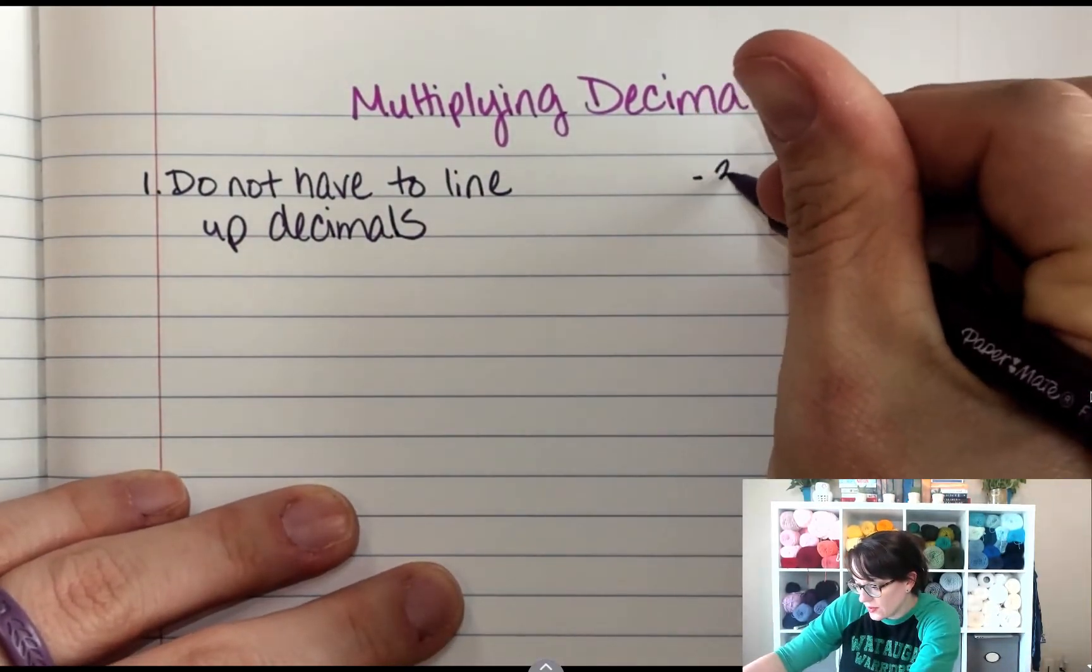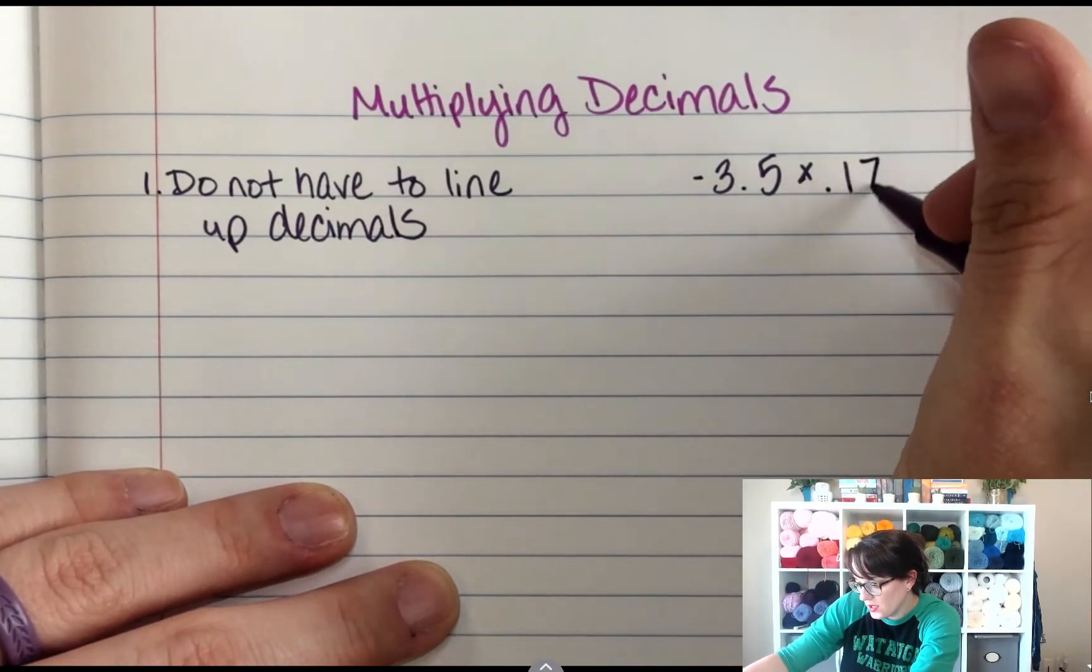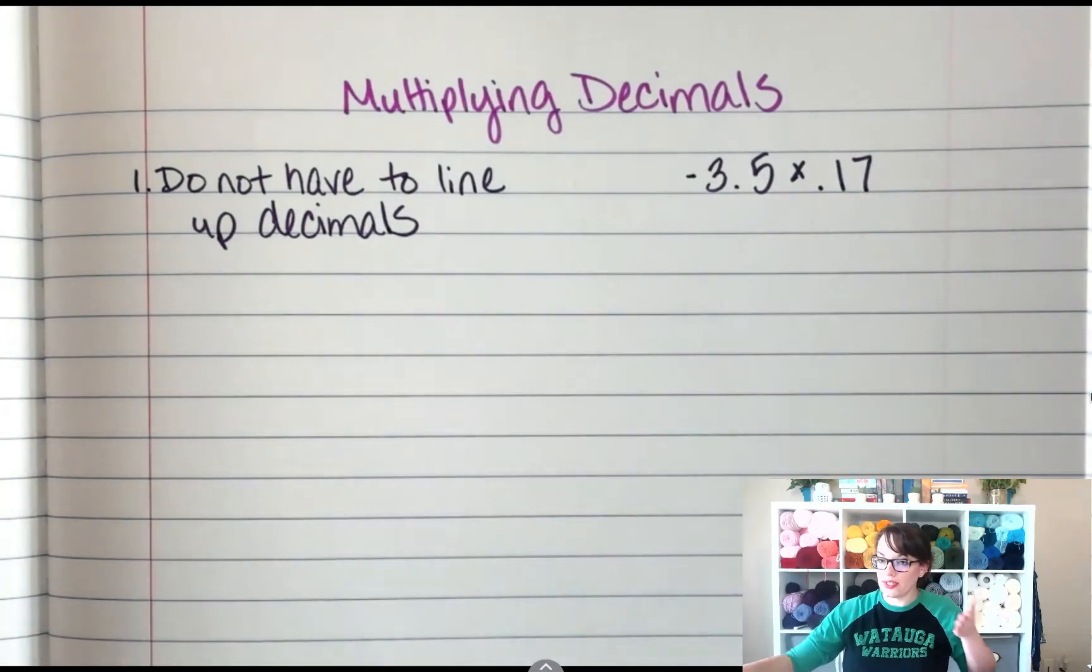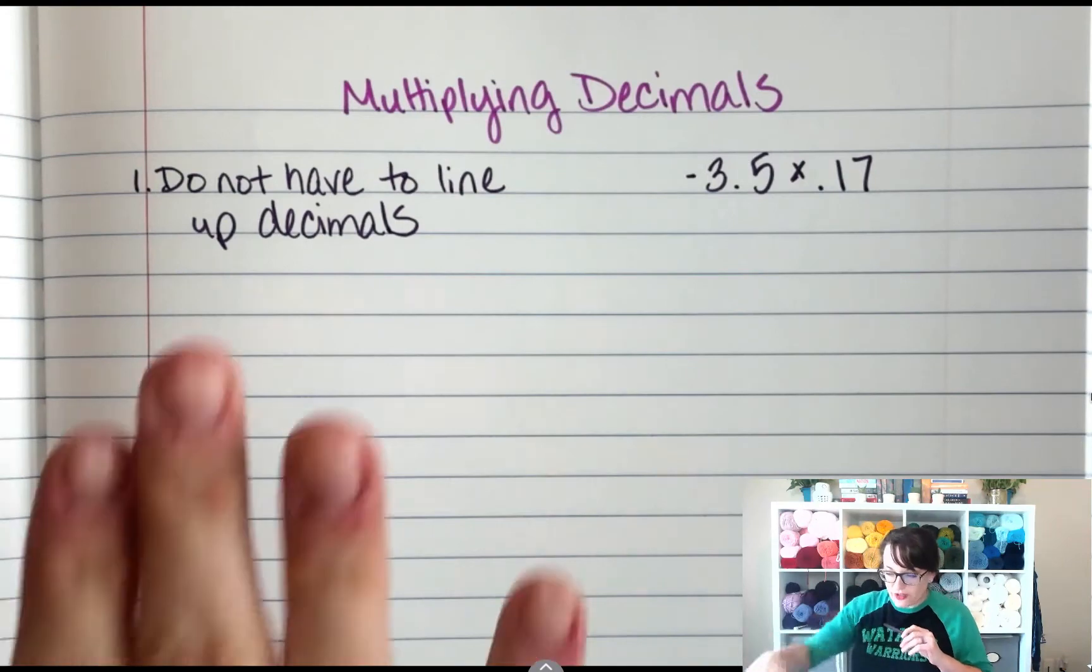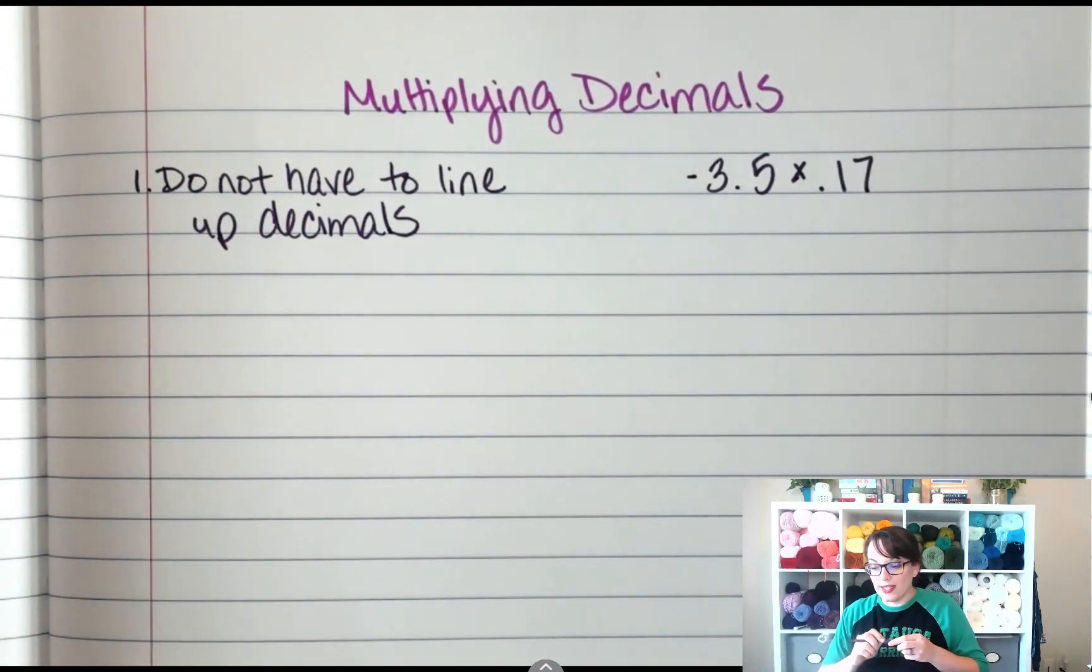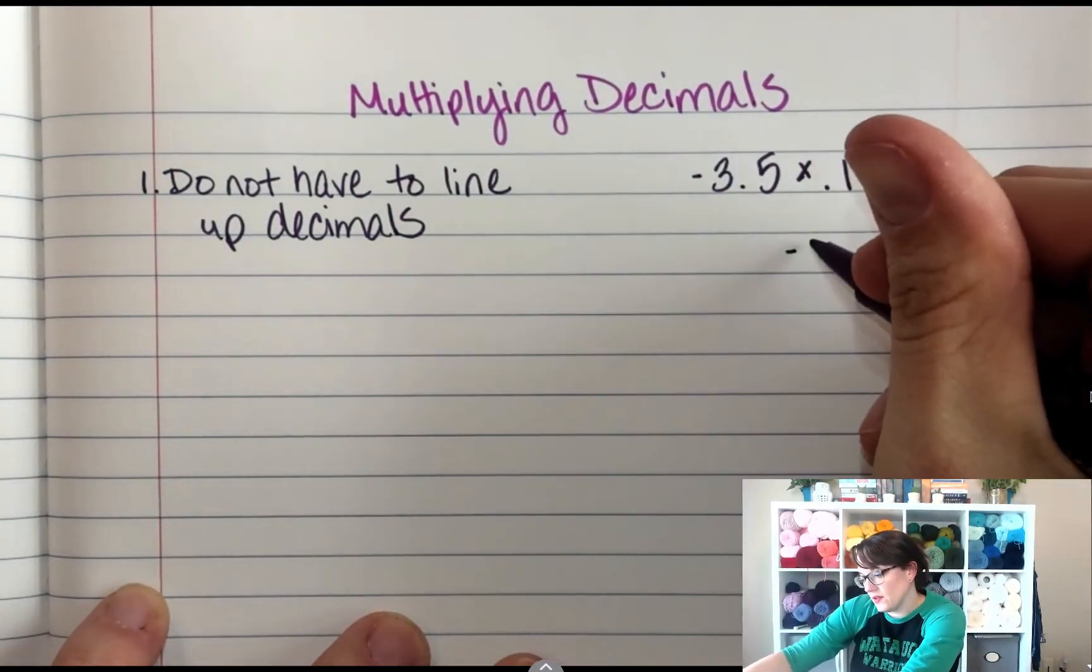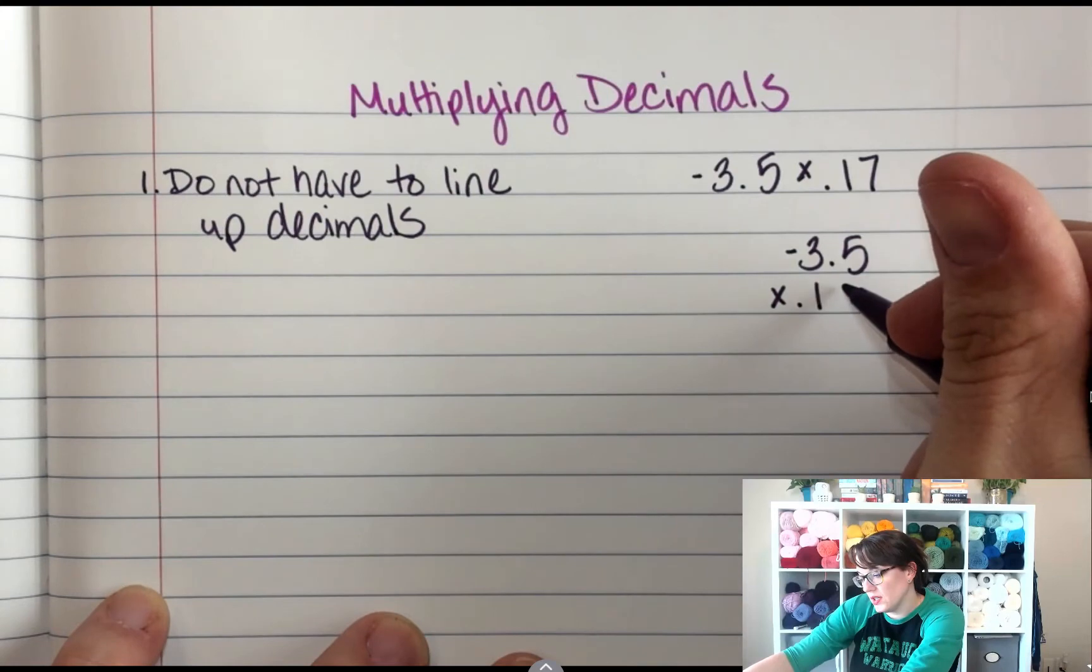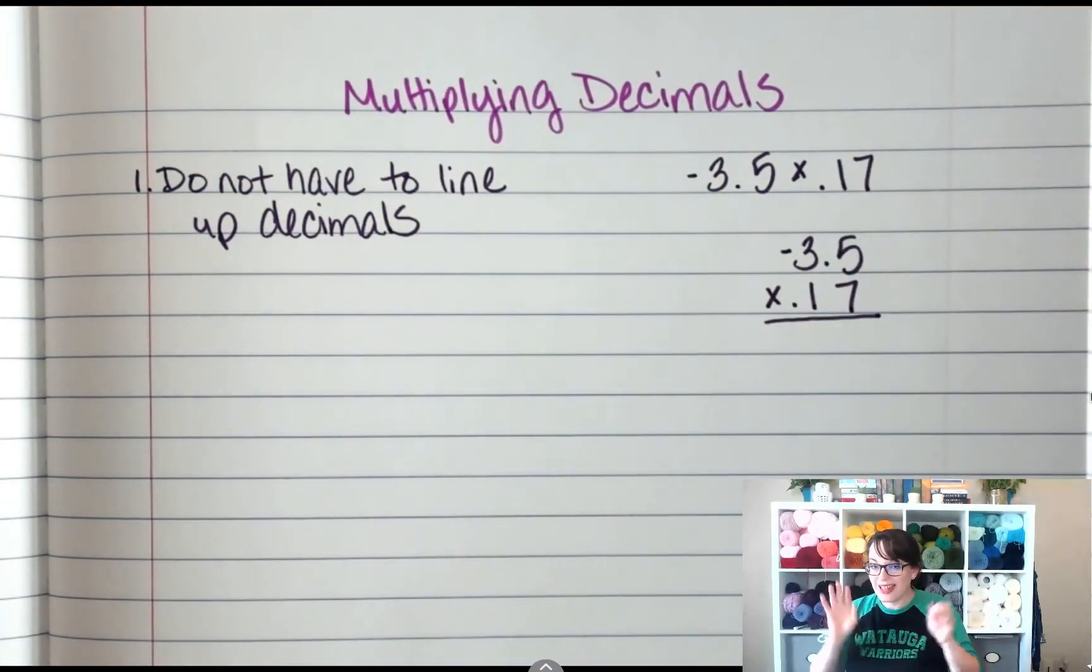Negative 3.5 times 0.17. Now notice that this negative 3.5 is a rational number. It's negative and then this one's 0.17. Alright, so the first thing, we don't have to line them up. So when I write it, I'm going to rewrite it vertically. So I've got negative 3.5 times 0.17. And notice that my decimals do not line up and that's okay.